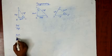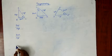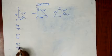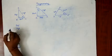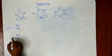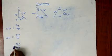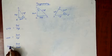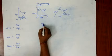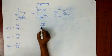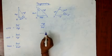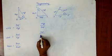The ratios are: base upon hypotenuse, and perpendicular upon base. These ratios are called sin theta, cos theta, and tan theta.